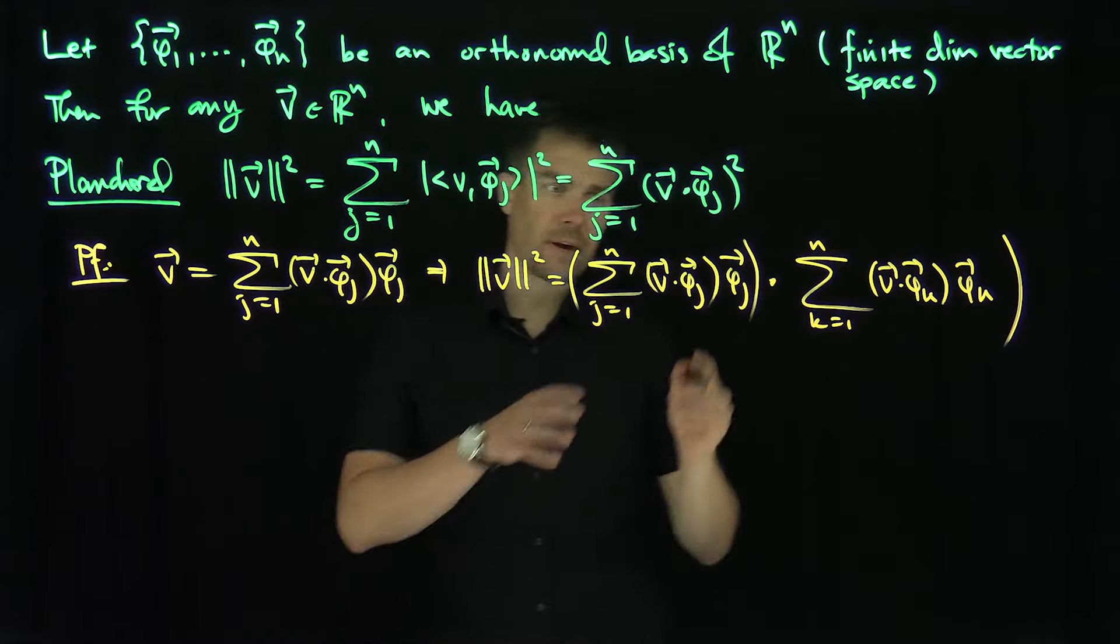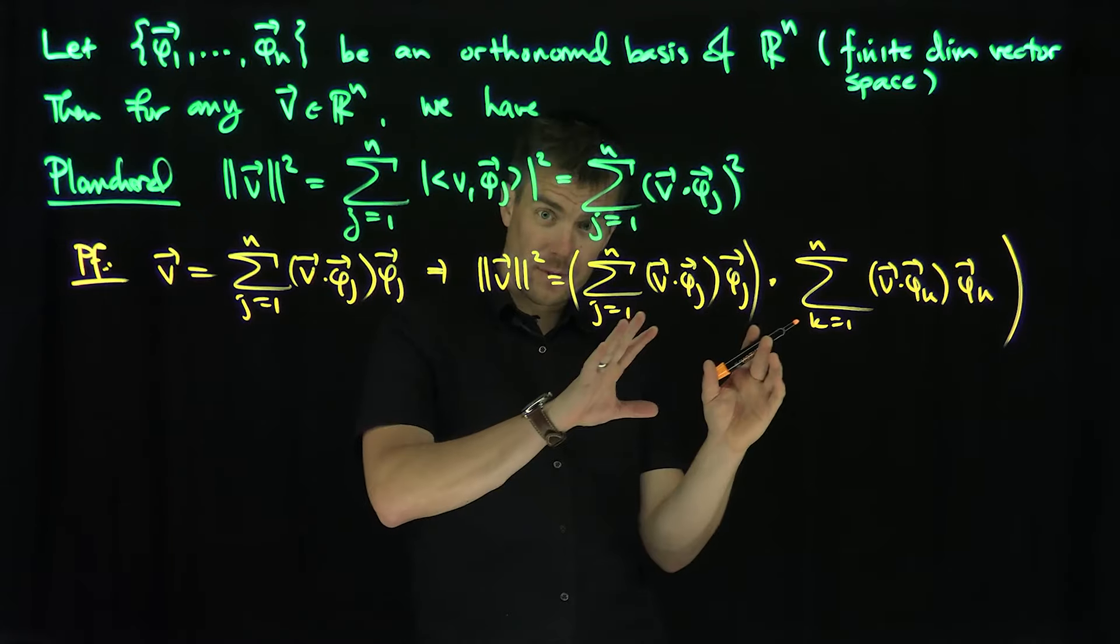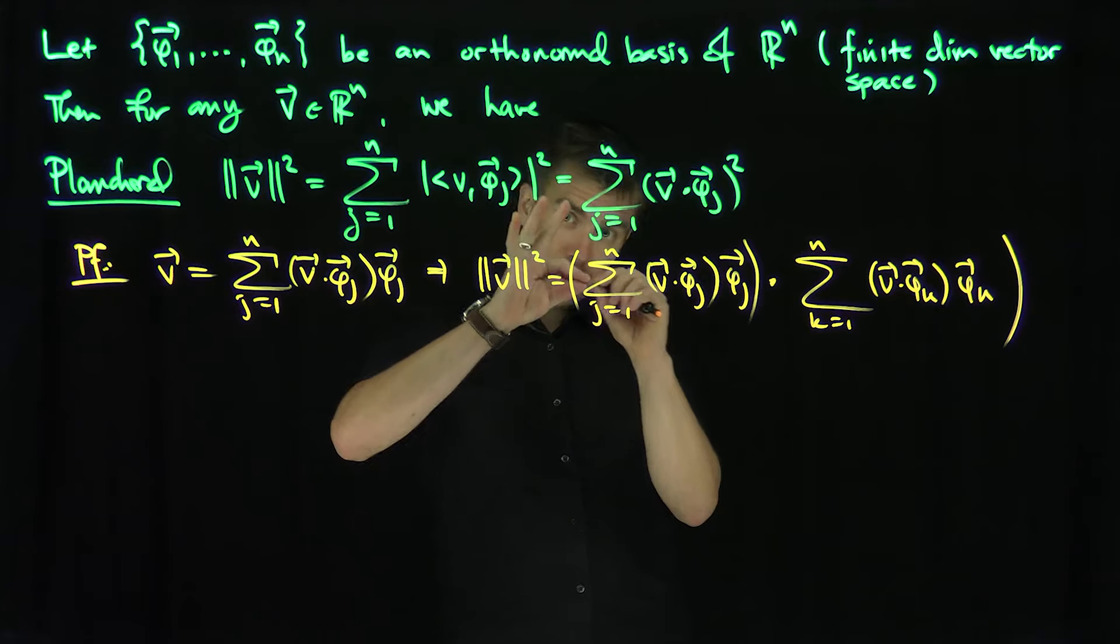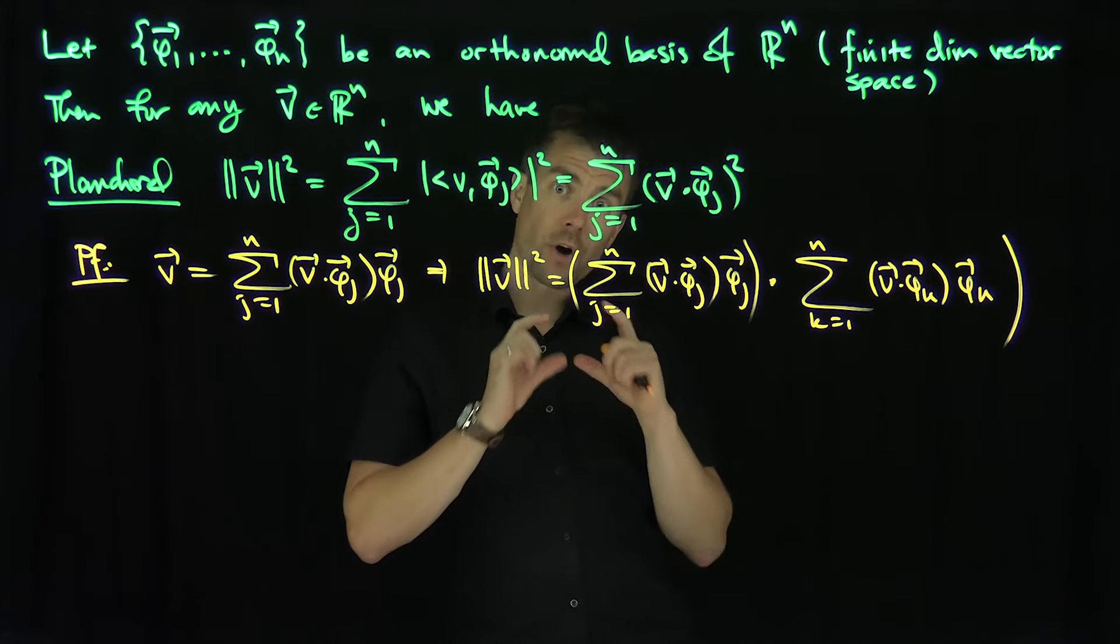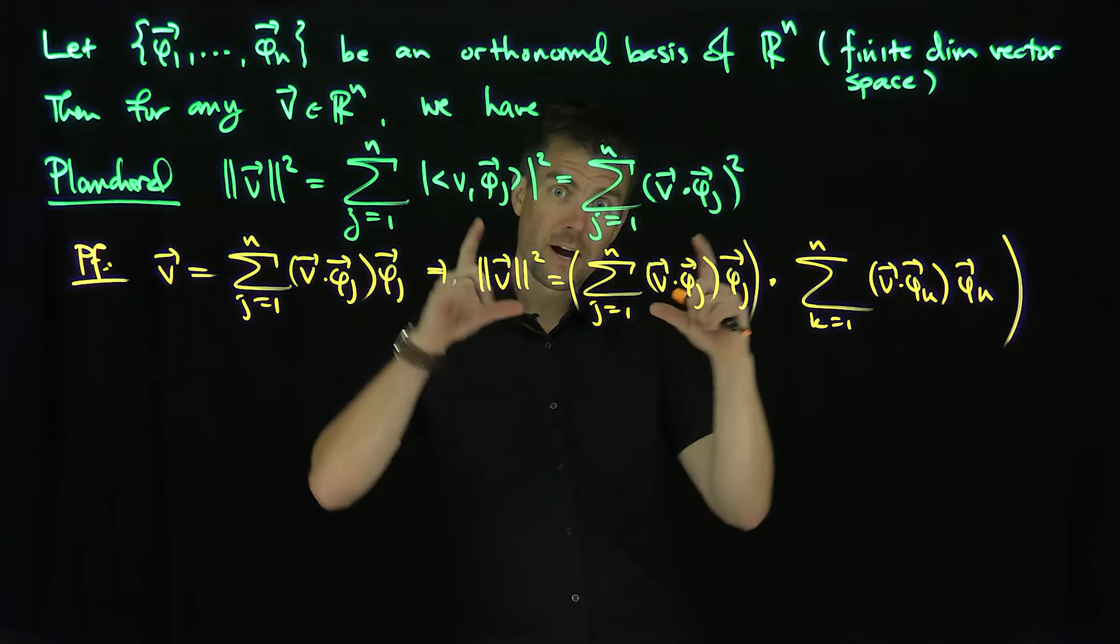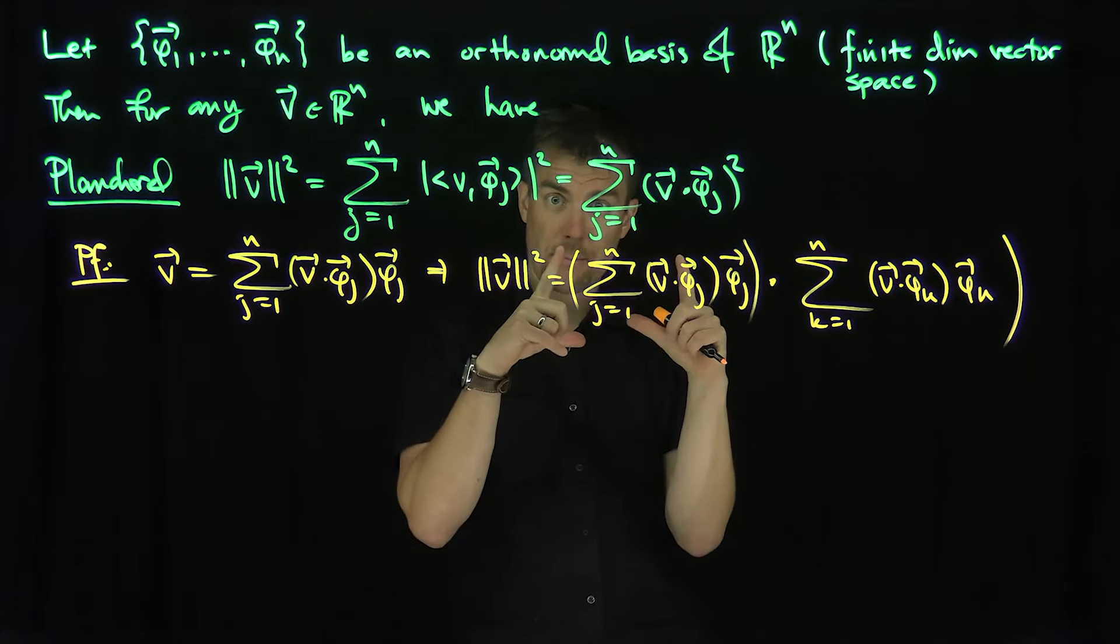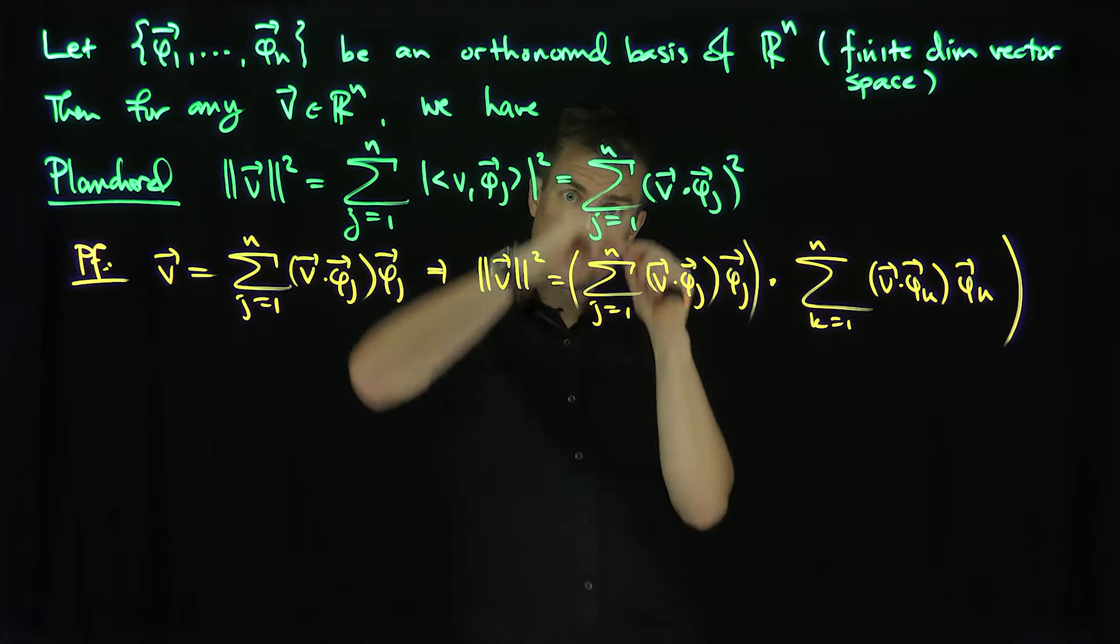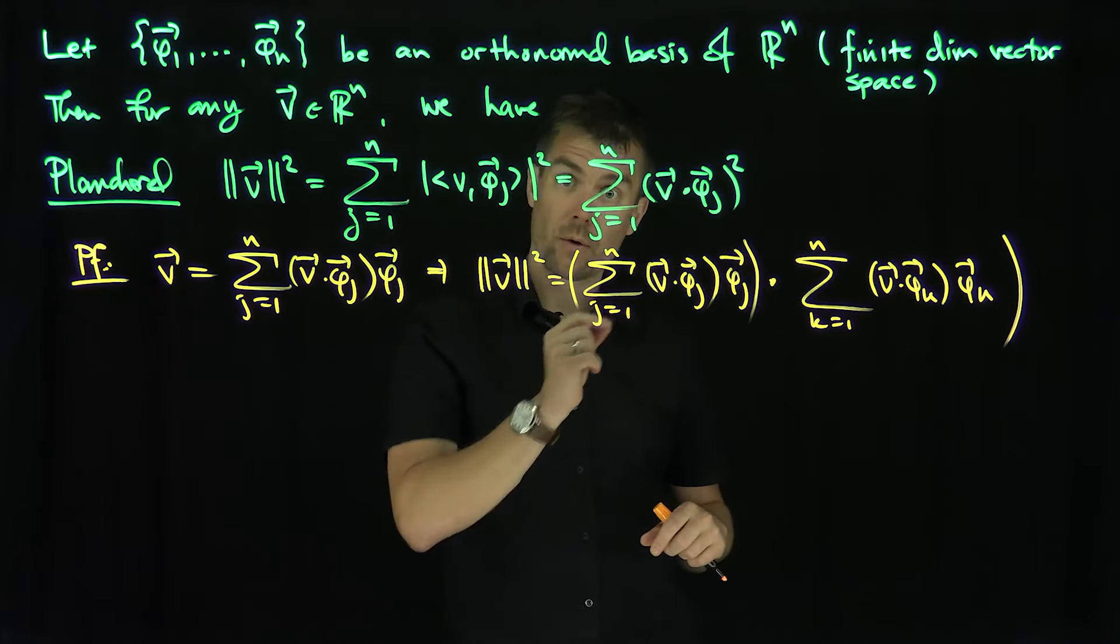Because in principle, for an arbitrary vector space, we have to basically foil every single term in this out. What we're really doing here is we're just foiling along the diagonal, which shows us the strength of these orthonormal sets. For an arbitrary basis, I'd have to do every single one of the n squared calculations in that product. With an orthonormal set, I can only do it along the diagonal, so I get a dimensional reduction using orthonormal sets.